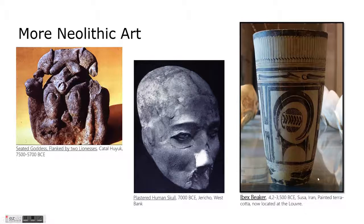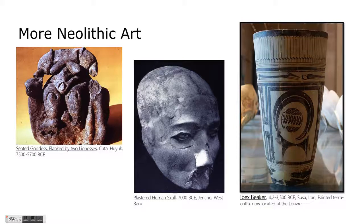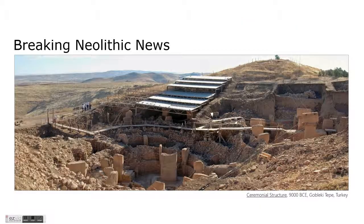The Neolithic culture is not just confined to these two main sites — it spread all over the world. One thing we also see is the development of ceramics in the Neolithic period. Interestingly, it becomes almost an international, universal style that spreads over most of the Middle East, into Asia as far as China, and into parts of Europe — with similar styles of decoration and similar forms. This ibex beaker is one of the oldest and most beautiful Neolithic ceramic pieces we have.